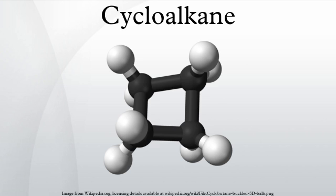That part of the six-member ring exclusive of the shared edge has four carbons. That part of the four-member ring exclusive of the shared edge has two carbons. The edge itself, exclusive of the two vertices that define it, has zero carbons. There is more than one convention for the naming of compounds, which can be confusing for those who are just learning and inconvenient for those who are well rehearsed in the older ways.